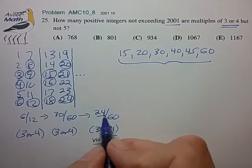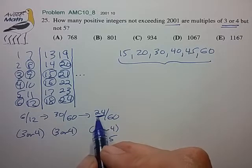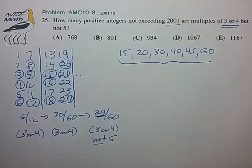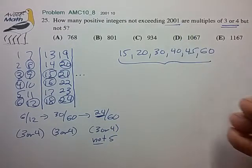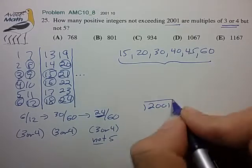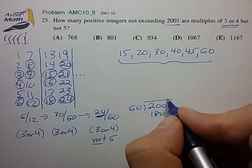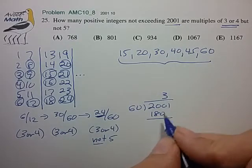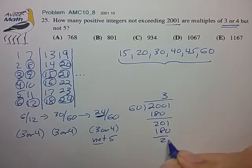And that's the key here. So for every block of 60 numbers, we'll have 24 numbers which satisfy all of these conditions. So now it's just a matter of trying to figure out how many blocks of 60 numbers are there in 2001. We can do that with a simple division. So 2001 divided by 60. So we have 180, 201, 180 again, 21.